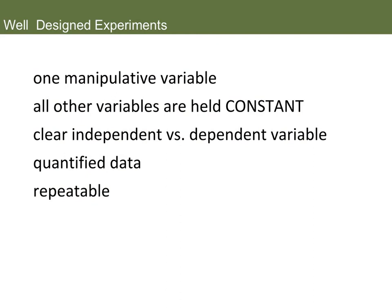Sometimes AP Biology questions will ask you to design an experiment. When designing an experiment, you want to mention that you have one variable you are manipulating and that all other factors are held constant. You have a clear independent variable and a clear dependent variable, and you would state what those are. You would explain how you are going to collect data and that the data is going to be quantified — meaning you'll have numbers and units. For example, if measuring temperature, specify whether it's Kelvin, Celsius, or Fahrenheit. You also want to always mention that your experiment is repeatable and that you would repeat it to verify your results.